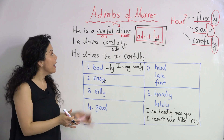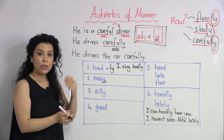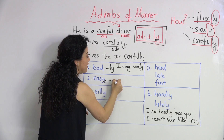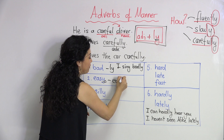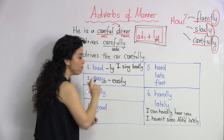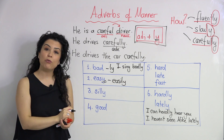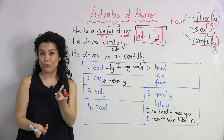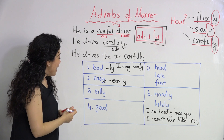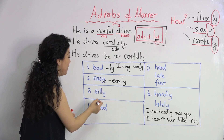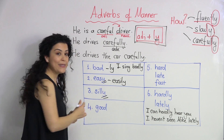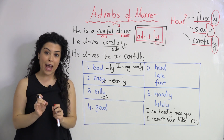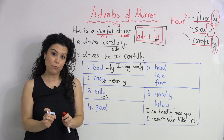When 'easy' ends with a -y, you need to replace the -y with an -i to form the adverb: 'easily.' For example: 'I can drive a car easily.' Another example is 'silly.' Silly is an adjective.